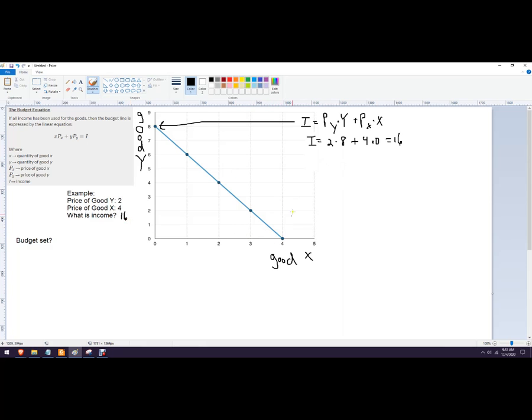You could do this another way. You could say, well, what if I don't want to think about good Y? I just want to think about good X. Well, then that would be 2 times 0. We can solve using this point right here plus 4. So that's the price of good X times 4. And we still get 16.